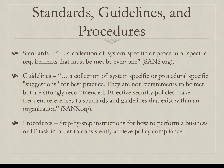Once we have policies in place, we develop standards, guidelines, and procedures to support them. Standards are a collection of system-specific or procedural-specific requirements that must be met by everyone — for example, the standard of using TLS to encrypt restricted data going out over the internet. A guideline is a collection of system-specific or procedural-specific suggestions for best practice. Unlike standards, guidelines are not requirements to be met, but they are strongly recommended. Standards and guidelines are designed to answer the question of how we are to meet the outcomes stated in policy.